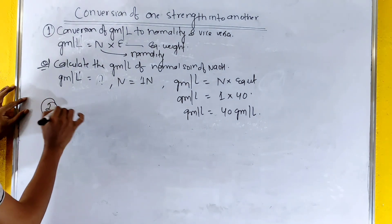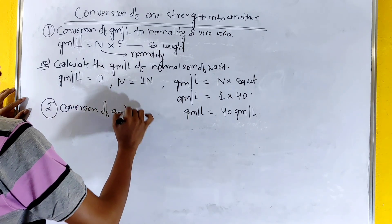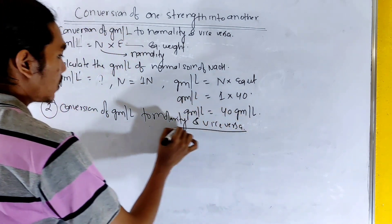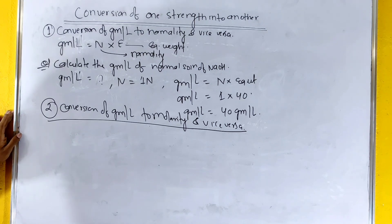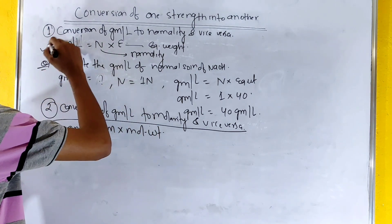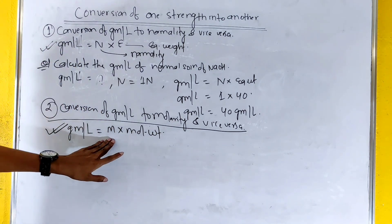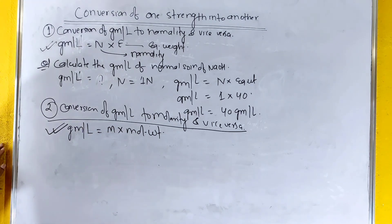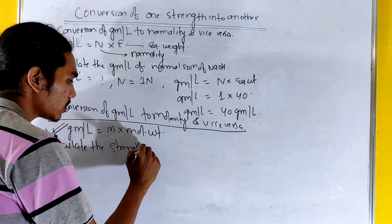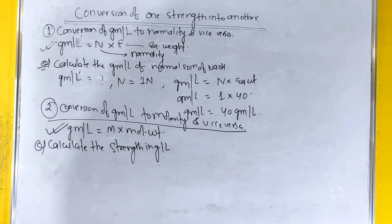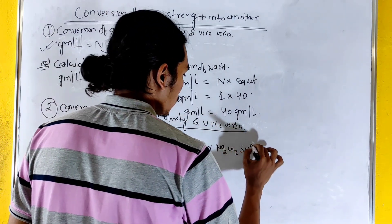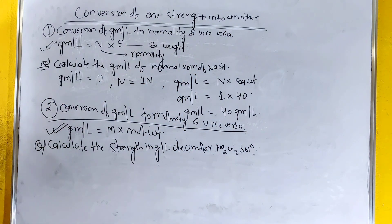Number 1 — conversion of gram per liter to molarity and vice versa. The formula is: gram per liter equals molarity into molecular weight. Now we have a question: calculate the strength in gram per liter of decimolar Na2CO3 solution.